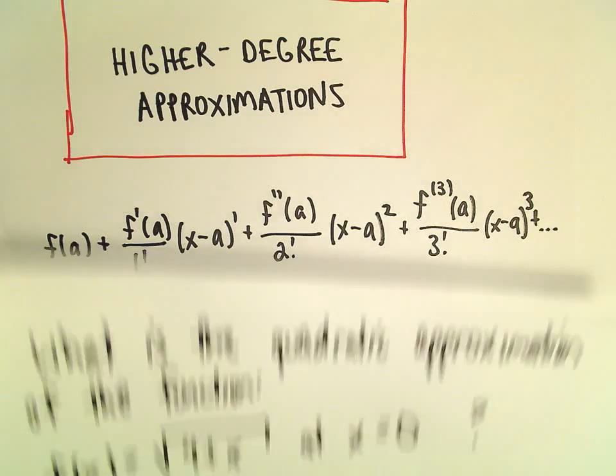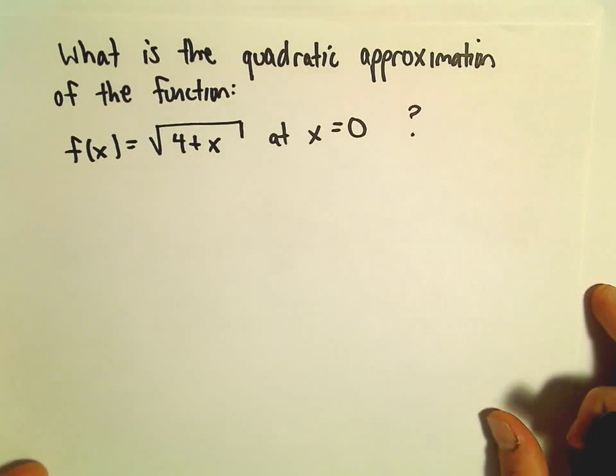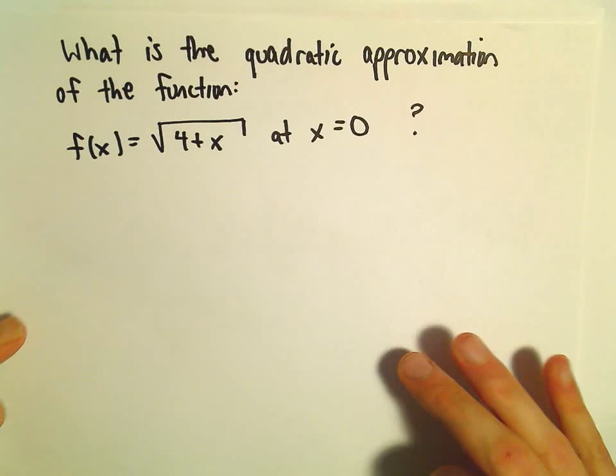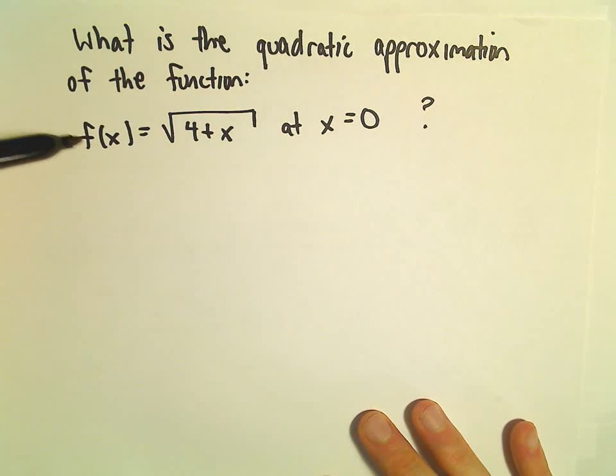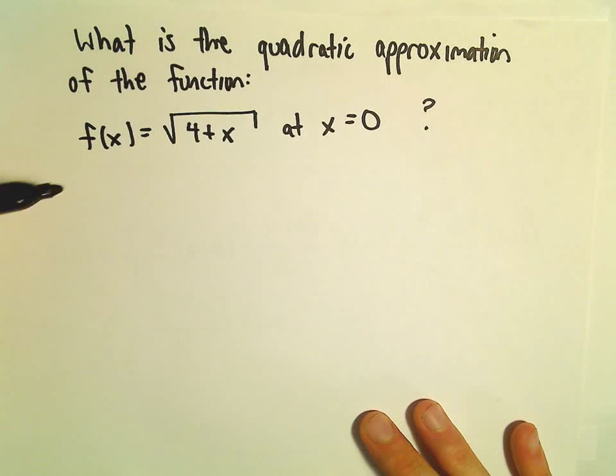All right, here we're going to do one more example of approximating a function with some polynomial functions. In this case, we're going to approximate this with a quadratic function, so degree 2.